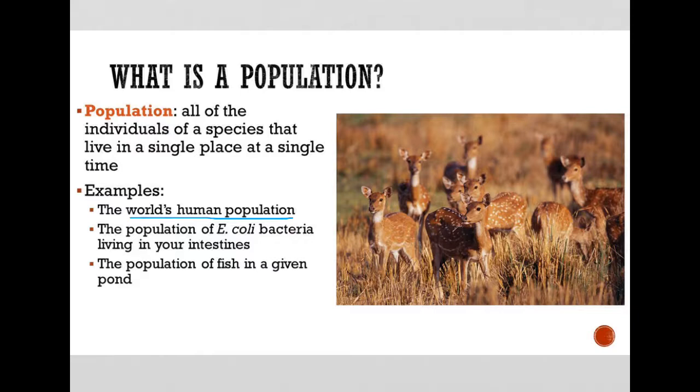But notice that I didn't say the population of humans today and also the ones that lived here in 1920. That wouldn't make sense, right? So they have to be of a single species living in a specific place at a single time. And that space can be really big or really small. But as long as they are all currently living there, they are a population.